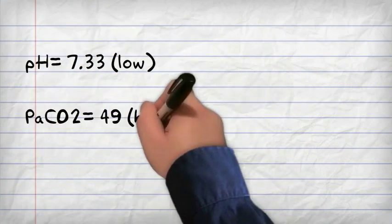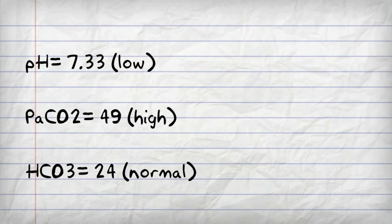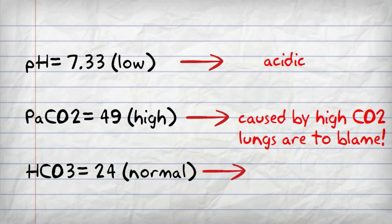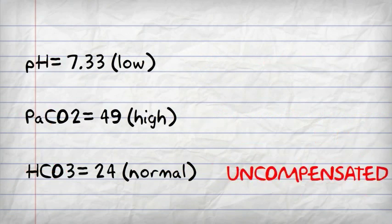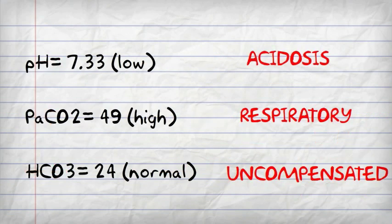So here we have a low pH, a high CO2, and a normal bicarbonate. So the pH is low, it's acidic, the high CO2 means that the lungs are to blame, it's causing the acidosis, and the kidneys are doing nothing because the bicarbonate is normal. So that's uncompensated respiratory acidosis.